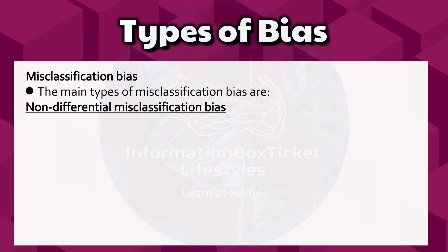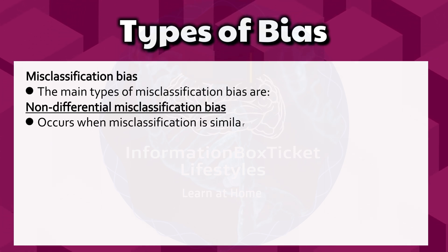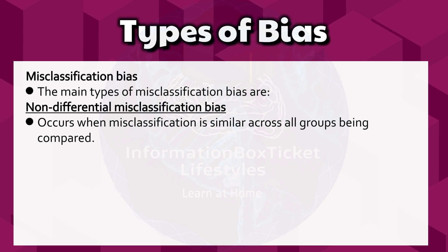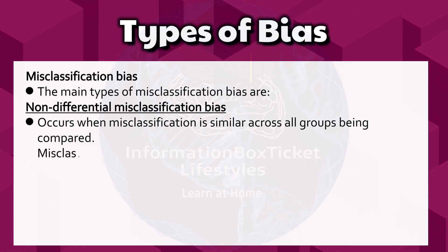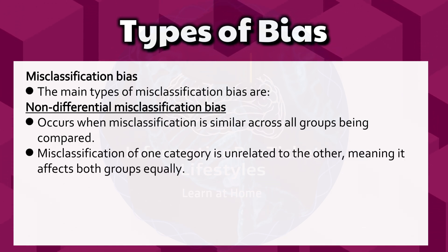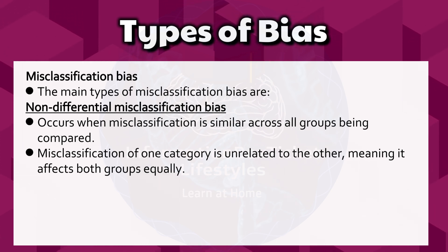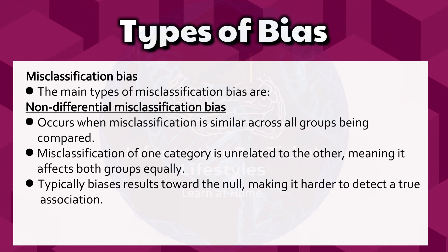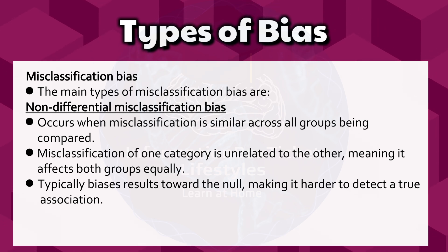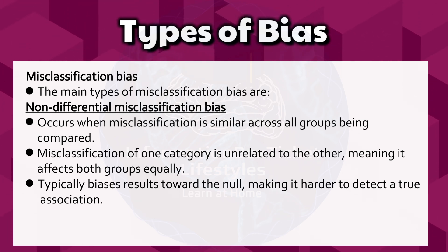Non-differential misclassification bias occurs when misclassification is similar across all groups being compared. Misclassification of one category is unrelated to the other, meaning it affects both groups equally. Typically, this biases results toward the null, making it harder to detect a true association.